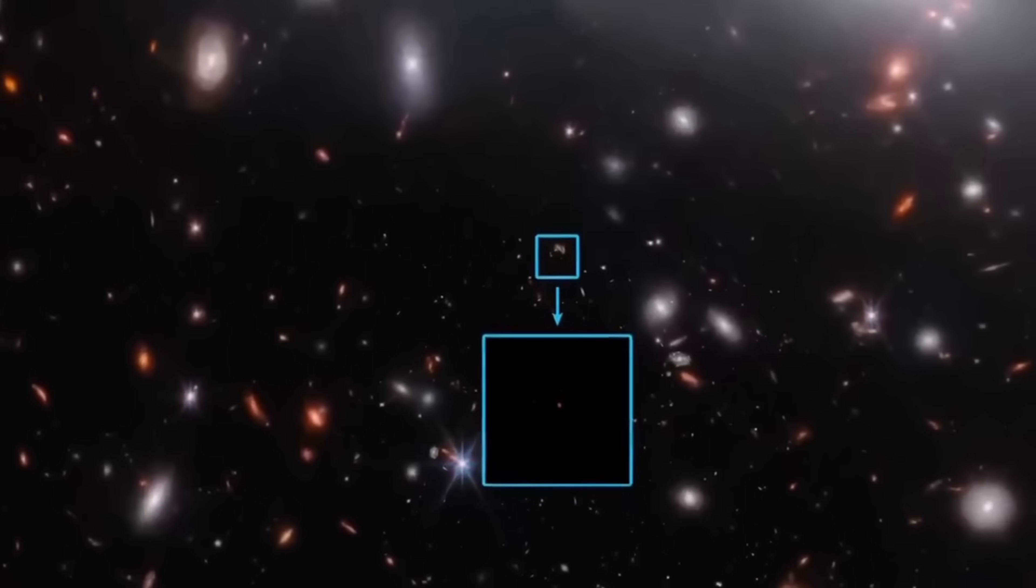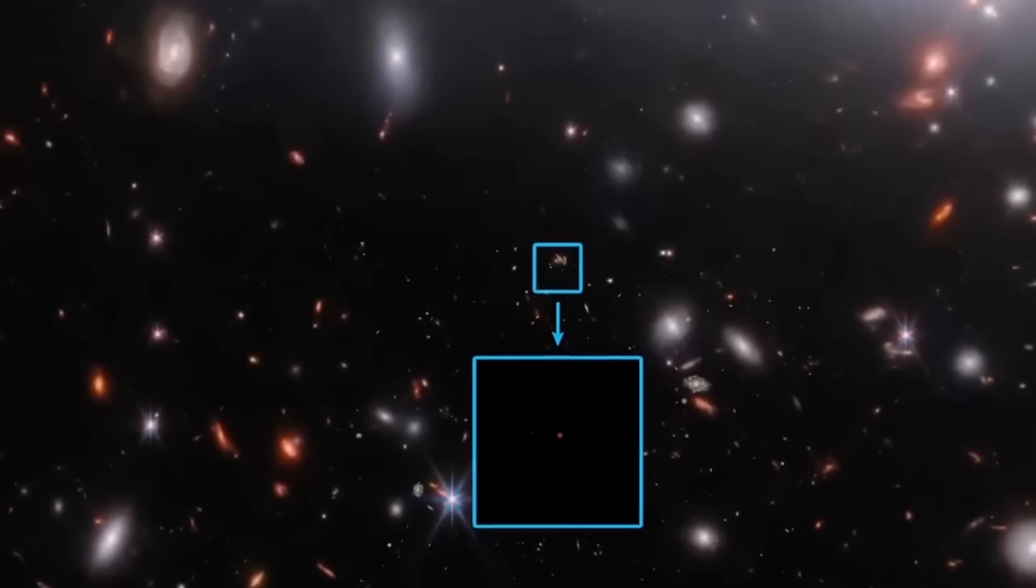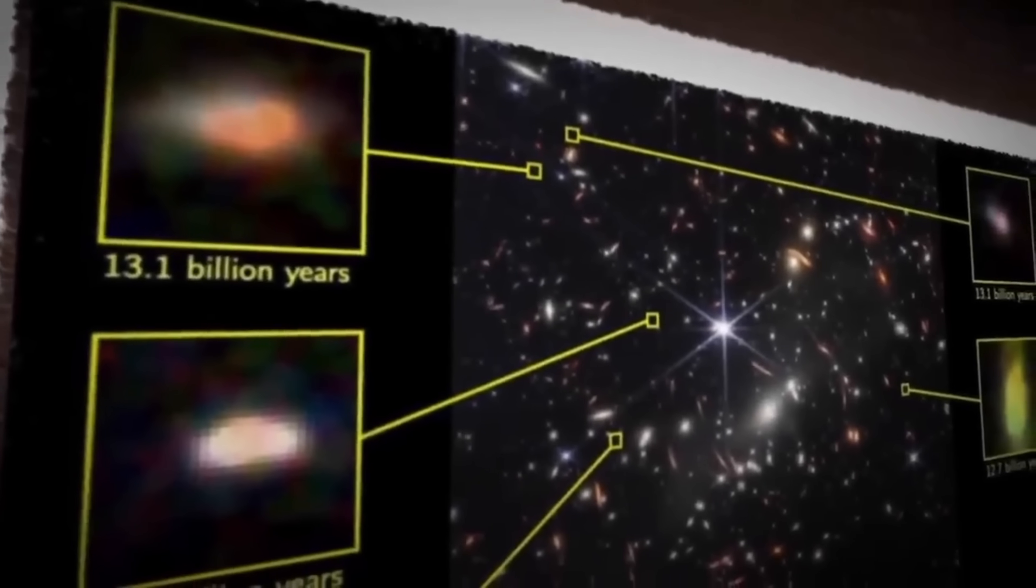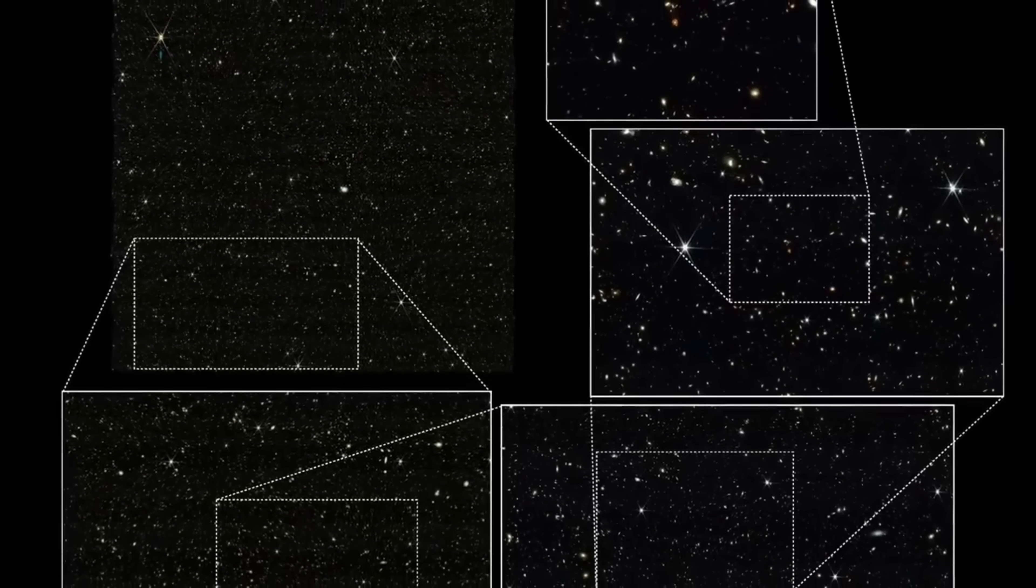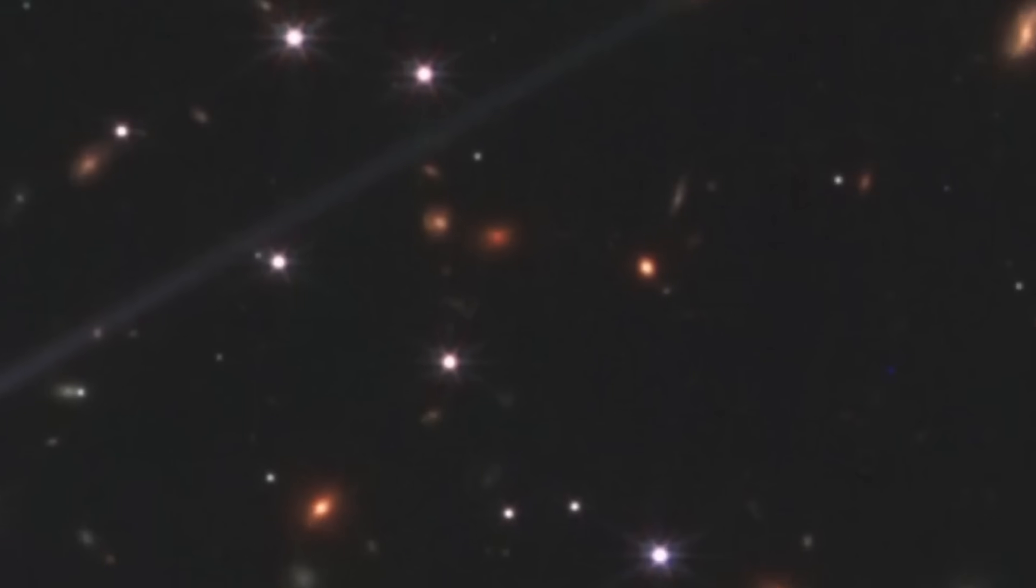Scientists are starting to rethink what they thought they knew about the universe, thanks to the latest discoveries from the James Webb Space Telescope. In its new images of the farthest regions of space, Webb has revealed things that current theories simply cannot explain.